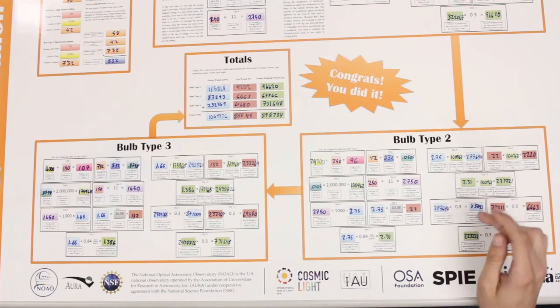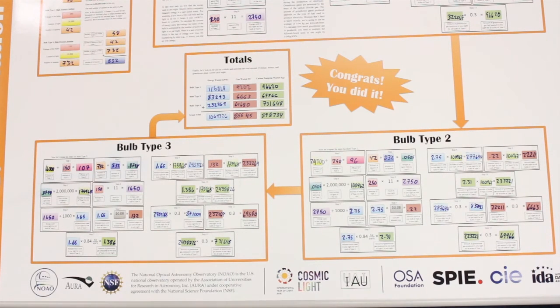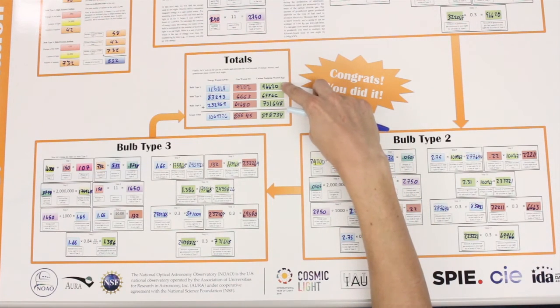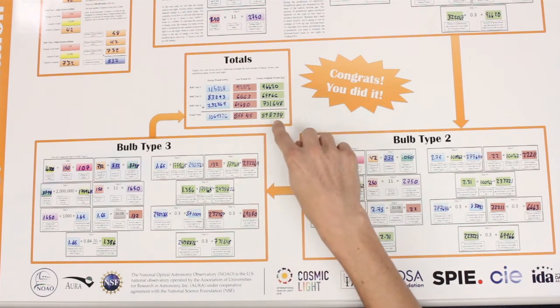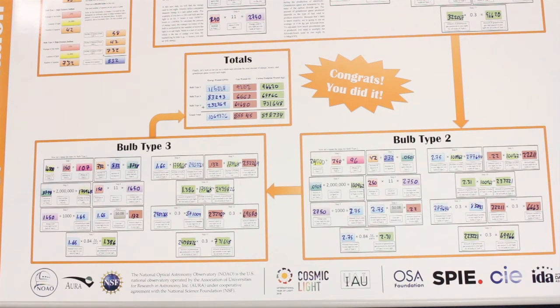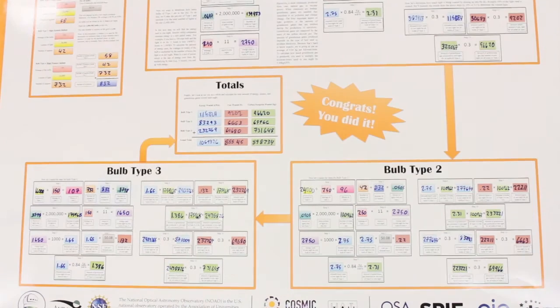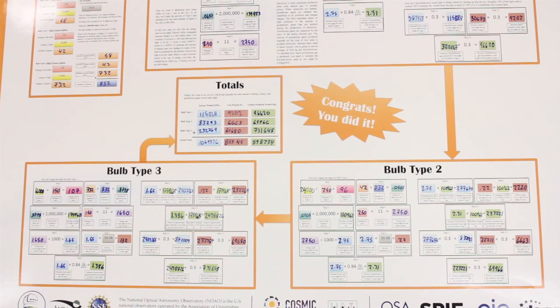You will now do the same thing for bulb type 2 and type 3, again using the corresponding values from the start here box. Once you've found the numbers in the last three boxes, step 11, 12, and 13, take those numbers and plug them into each of the different types of bulbs. This is the total amount of energy, cost, and CO2 that is wasted on uplight. Uplight is the light that is lost into space and never used on the ground. That is what you calculated when you multiplied each of these values by 30%.